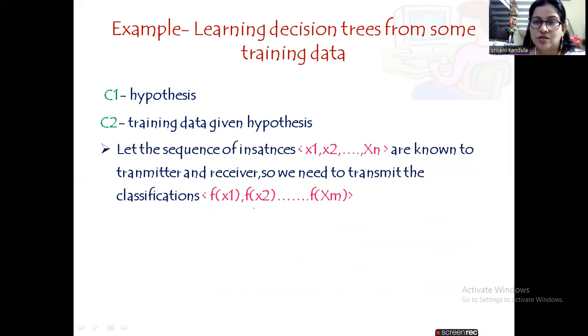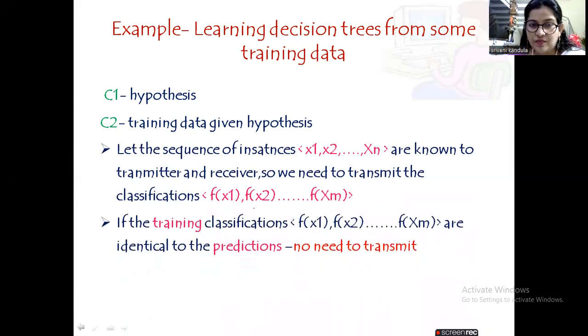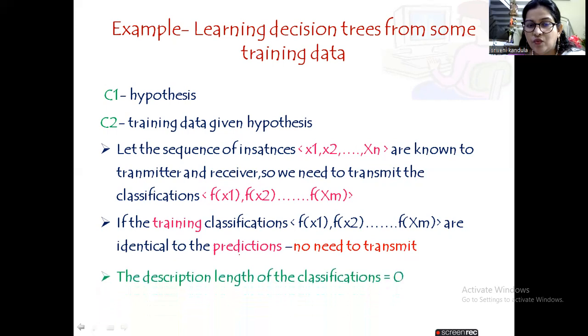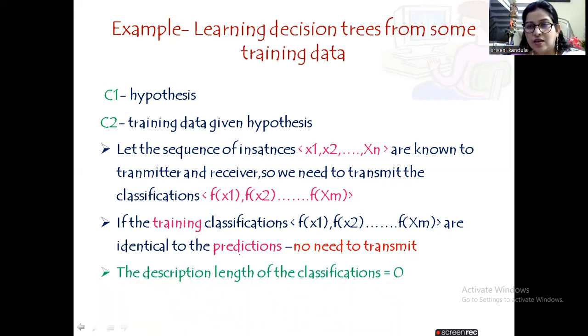If the training classifications—f(x1), f(x2), up to f(xm)—are identical to what is predicted, that means the original data and the predicted data both are the same, so there is no error. There are no misclassifications, so hence there is no need to transmit. Only classifications are to be sent. There are no misclassifications, so we won't send any data, thereby reducing the description length to zero.